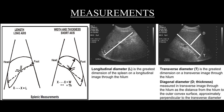Let's talk about the sonographic measurements of the spleen. We have three calibers: the longitudinal diameter, the transverse diameter, and the thickness or diagonal diameter. For the longitudinal diameter, which is the greatest dimension, the plane of measurement goes through the hilum and through the parenchyma without going outside it. For the transverse diameter, the image plane is adjusted at the hilum for the greatest transverse dimension. The diagonal diameter is measured in the transverse image through the hilum, from the hilum to the outer cortex surface, approximately perpendicular to the transverse diameter.